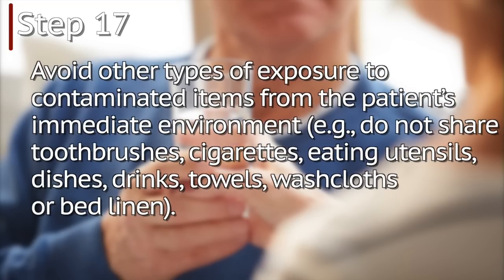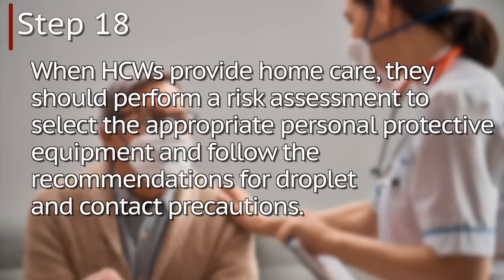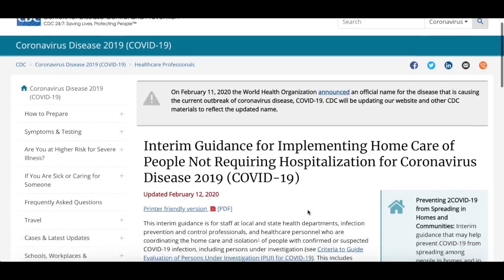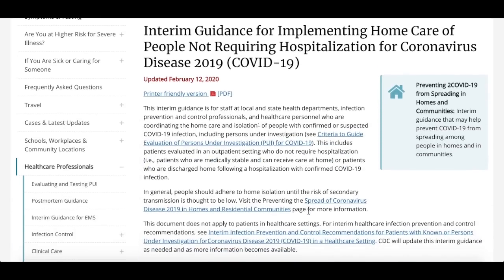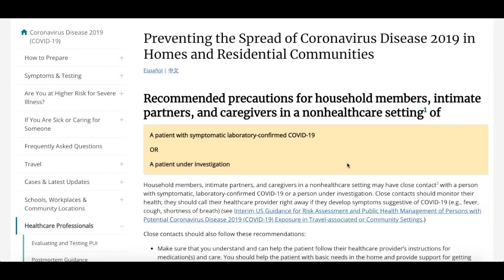Step seventeen: avoid other types of exposure to contaminated items from the patient's immediate environment — do not share toothbrushes, cigarettes, eating utensils, dishes, drinks, towels, washcloths, or bed linen. Step eighteen: when healthcare workers provide home care, they should perform a risk assessment to select the appropriate personal protective equipment and follow recommendations for droplet and contact precautions. Those are the 18 steps. Remember, if anyone at home has conditions that worsen, contact their medical provider or doctor immediately. Additional information will be linked in the description below this video.